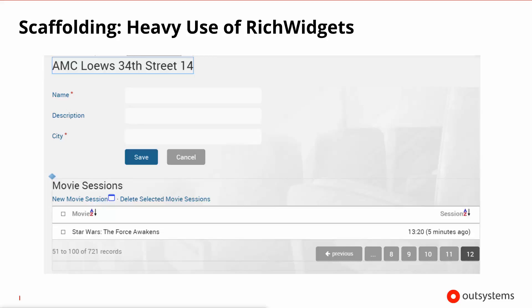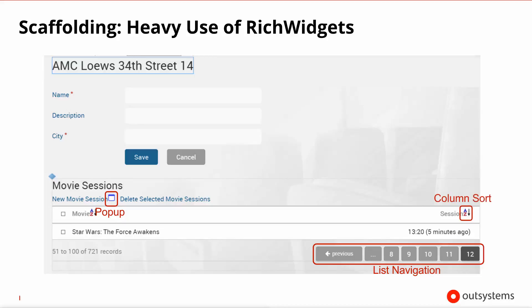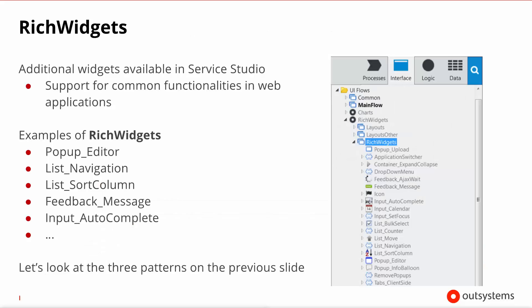If you pay close attention, you'll notice quite a few artifacts we haven't seen before — these are what we call rich widgets, and we'll describe some of the most interesting ones that scaffolding is using here. There is the pop-up, list navigation, and a column sort widget on each column. It's important to note that these are just three of the many widgets that rich widgets employs. Although we're using scaffolding to show them, you can actually use them by dragging and dropping them directly into your own manually created screens.